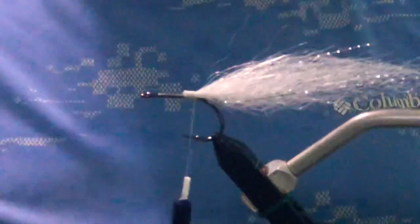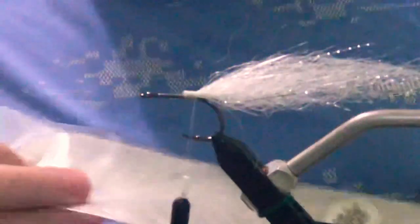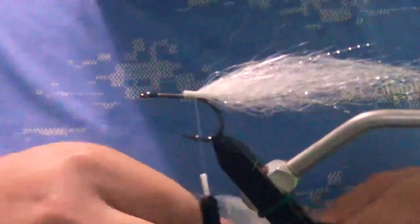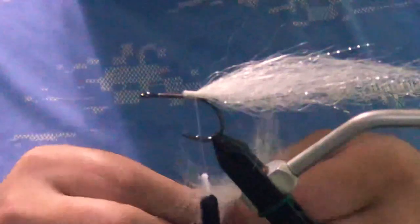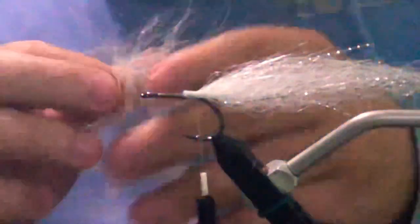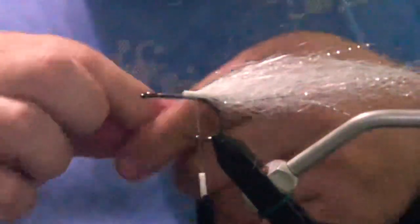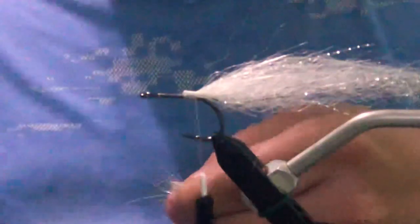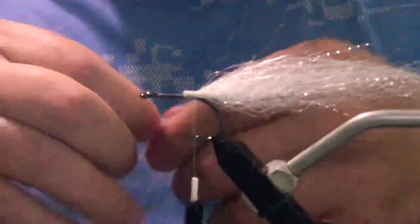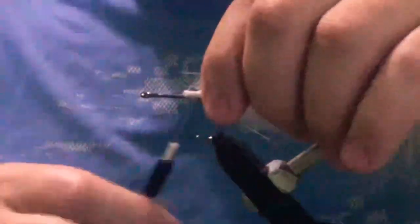The next material we're going to use is 3-inch Senyo chromatic brush from EP. Trim a little bit of this wire out of there, and we'll tie this in right here on the back.